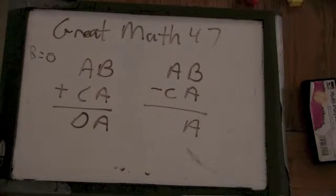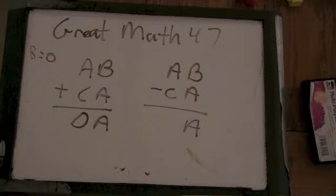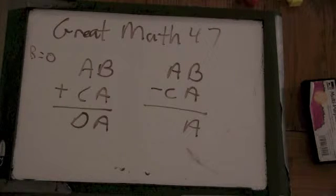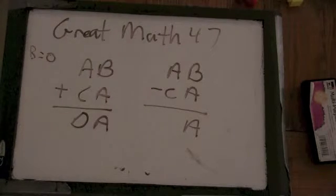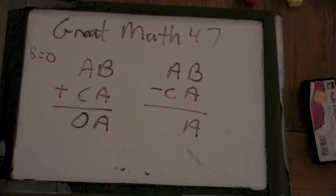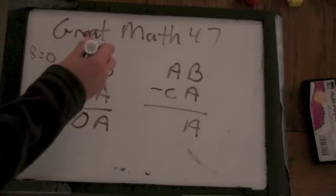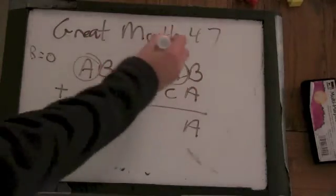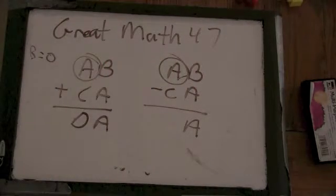Interesting. So B, the digit B, you think is 0. Okay. And then we know A can't be 0 here. Why? Because it starts this number. Oh yeah. So we could have seen that from the start. Good observation.